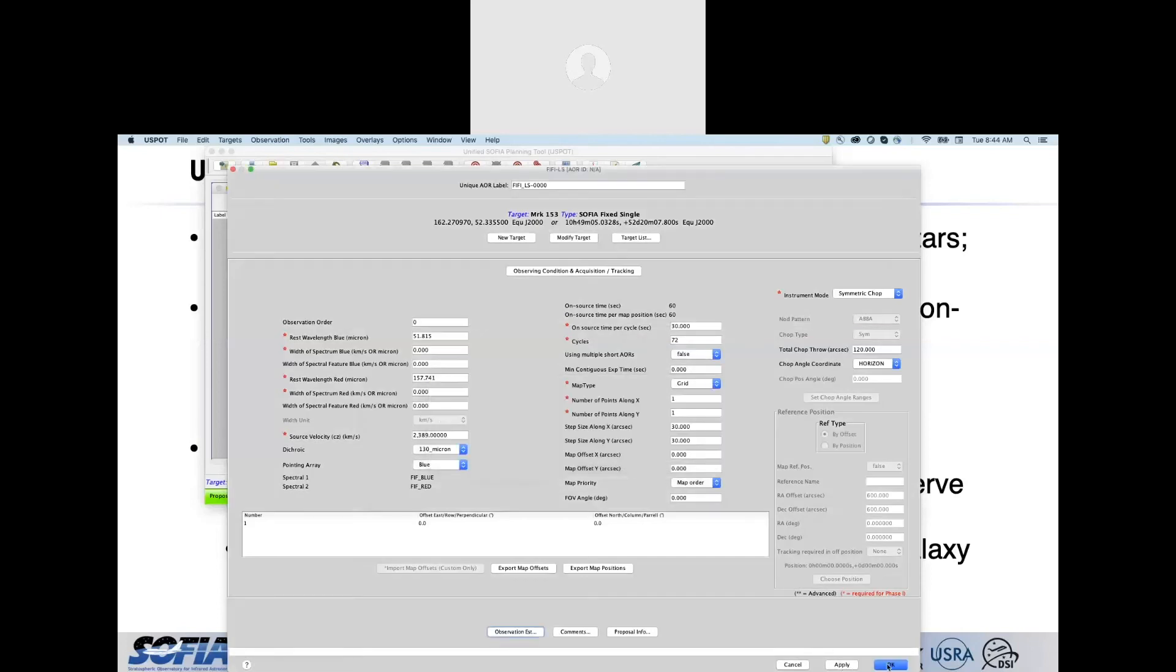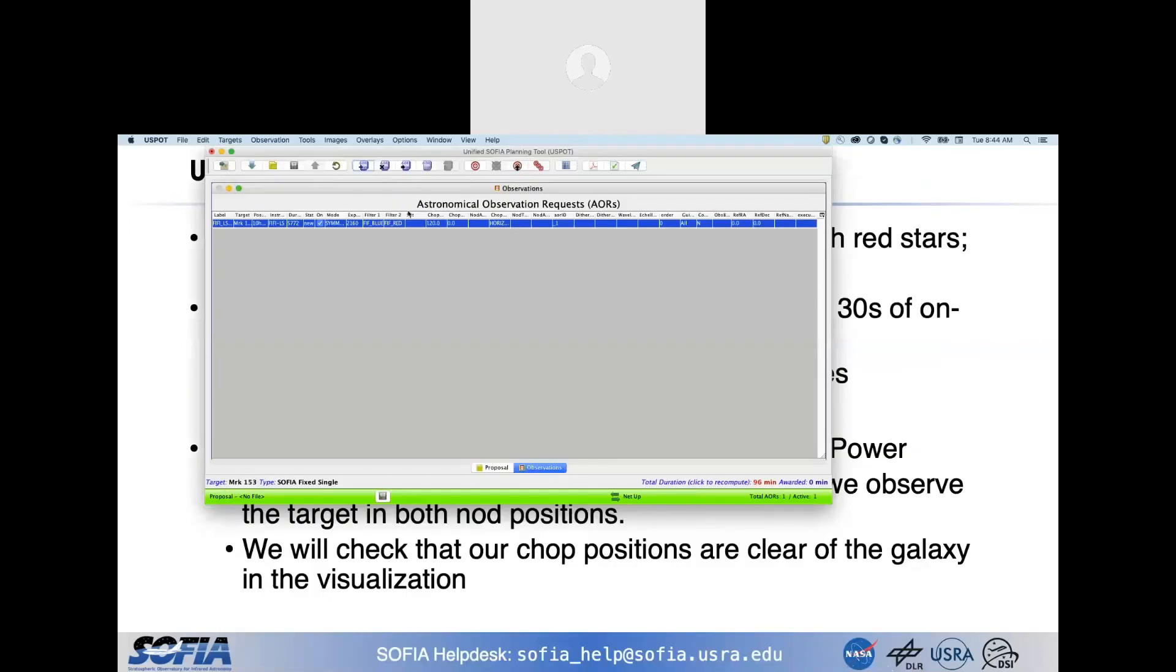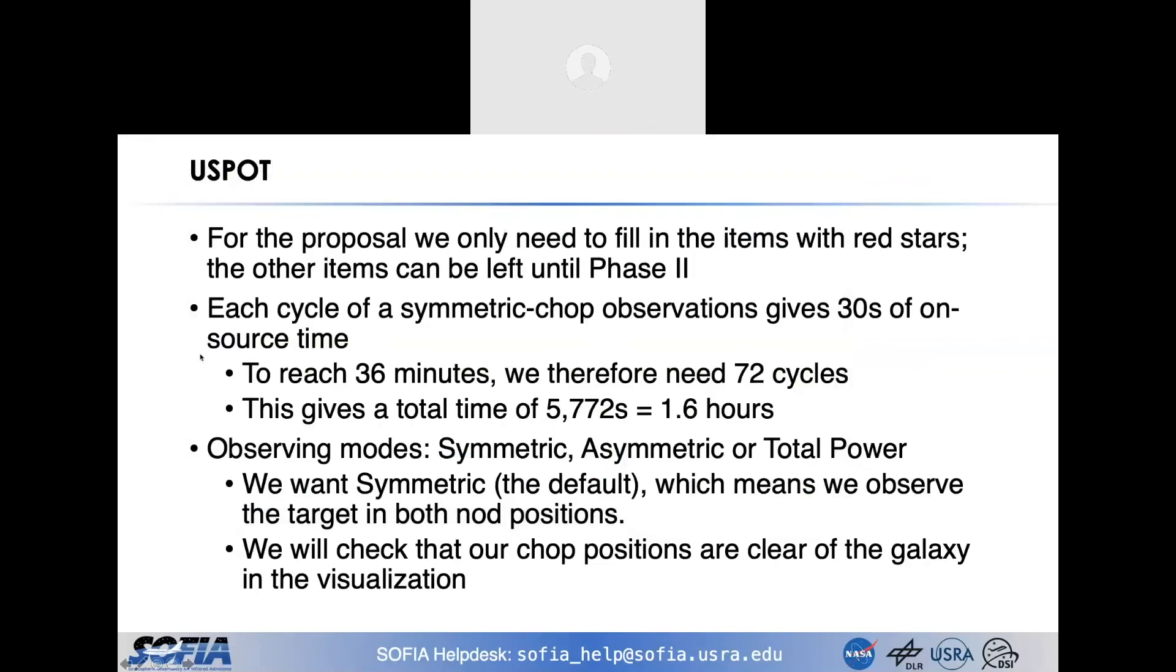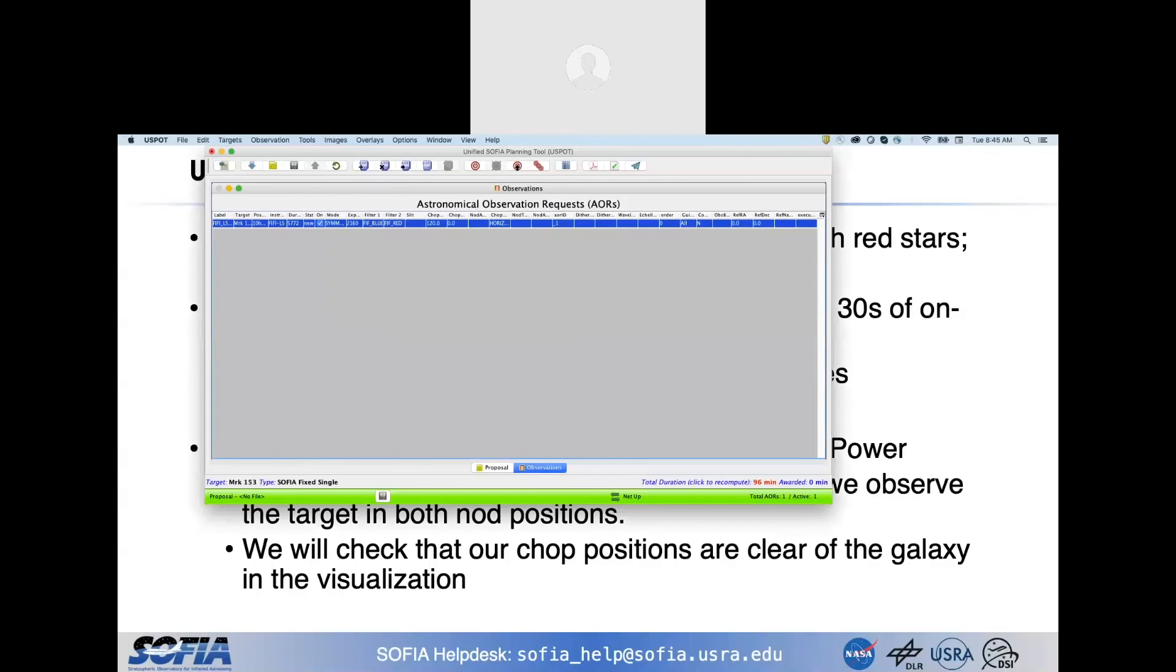I'm going to hit OK on this. You can now see in this observation request, we have that here. We have 36 minutes, 72 cycles, total time 1.6 hours. We're going to want symmetric chop. We're going to observe a target in both nod positions. And now we want to put up a visualization to make sure that those chop positions are going to be clear of the galaxy. Sometimes if it's a big galaxy, you can only chop in certain directions or you have to chop by a certain amount. Obviously, if you're looking at a source inside our galaxy, this becomes even more critical. Ten minutes, Robert.